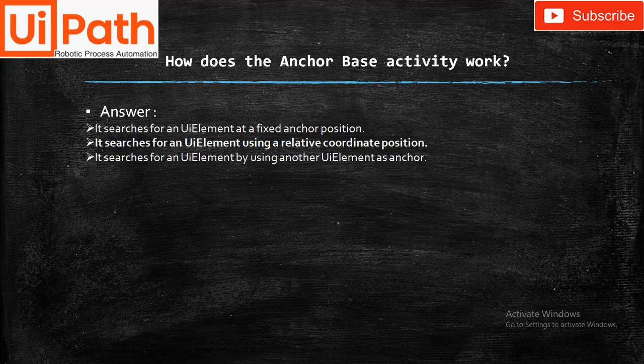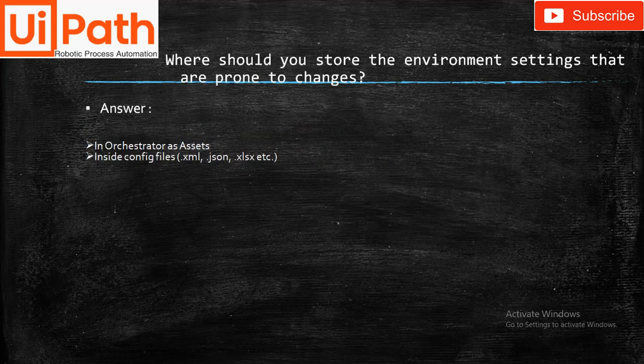How does the Anchor Based activity work? You have to select three answers out of four: First, it searches for a UI element at a fixed anchor position. Second, it searches for a UI element using relative coordinate positions. Third, it searches for a UI element by using another UI element as an anchor.